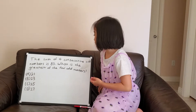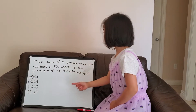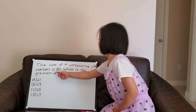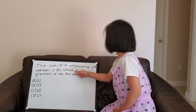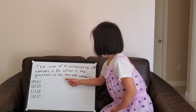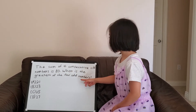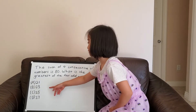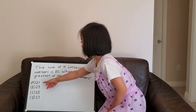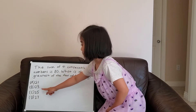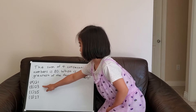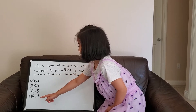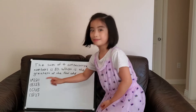The problem is: the sum of four consecutive odd numbers is 80. What is the greatest of the four odd numbers? The choices are A: 21, B: 23, C: 25, and D: 27.